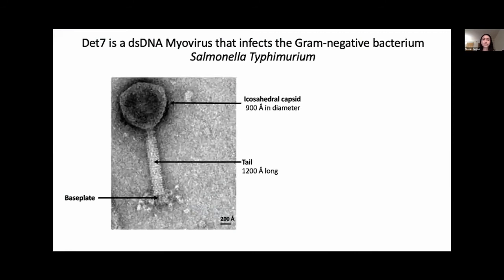DET7 is a double-stranded DNA bacteriophage that infects the gram-negative bacterium Salmonella typhimurium, which is a human pathogen and belongs to the myoviridae phage family. The phage is composed of an icosahedral capsid approximately 900 angstroms in diameter, a tail approximately 1,200 angstroms long, and a base plate which interacts with the host cell to initiate phage infection.